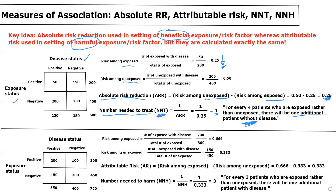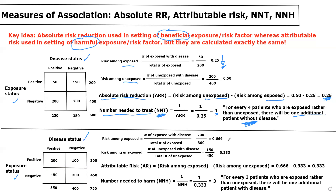Now let's contrast this with the example at the bottom. Again, disease status is along the columns and exposure status along the rows. If we were to calculate the risk among the exposed, that would be 200 divided by 300, which would be 0.666. And then the risk among the unexposed would be 150 divided by 450, which would be one-third or 0.333. In this case, we see that the risk among the exposed is higher, and therefore the exposure is harmful — maybe it's some sort of risk factor like smoking.